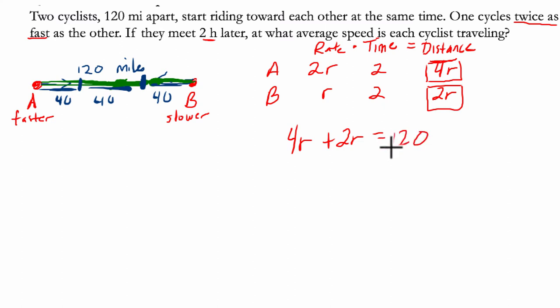4R plus 2R will have to equal the total distance of 120. And that means, of course, 6R is 120. Divide both sides by 6, and we get R equals 20.